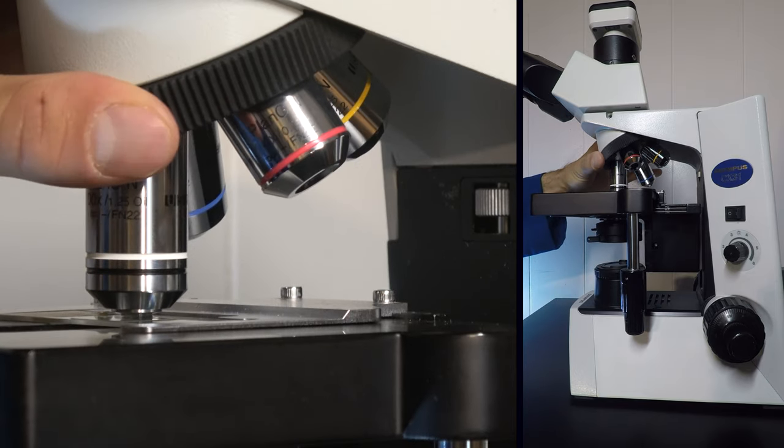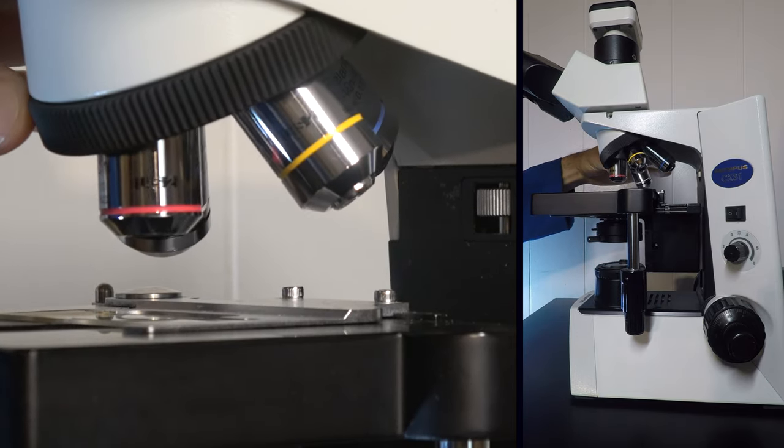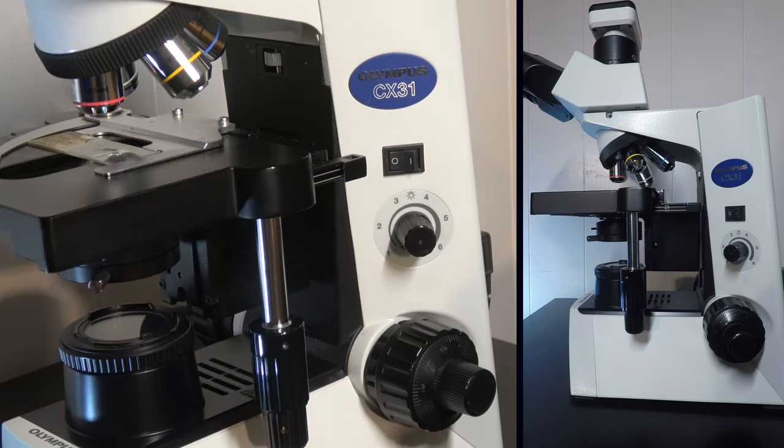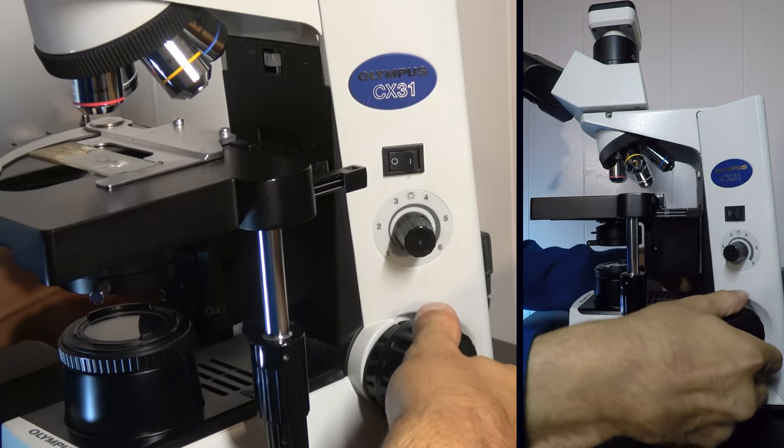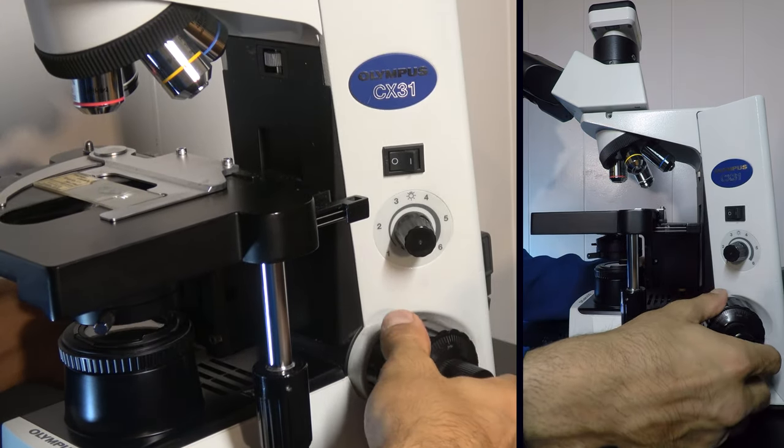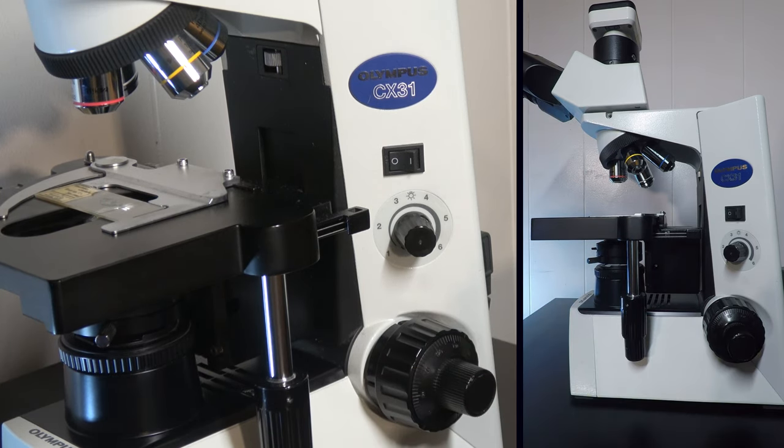If you are at the highest objective on your scope, it is safe to go directly to the lowest objective. This gives the most working distance again to allow for the stage to be moved without accidentally adjusting the stage up and crashing it into the objective lens.